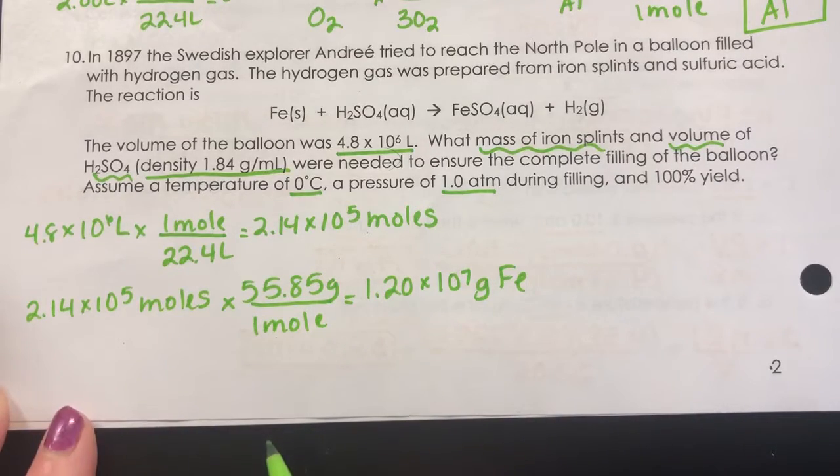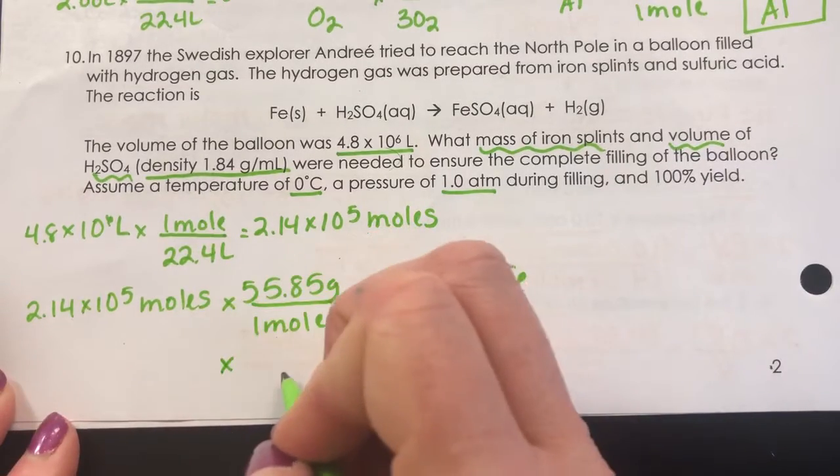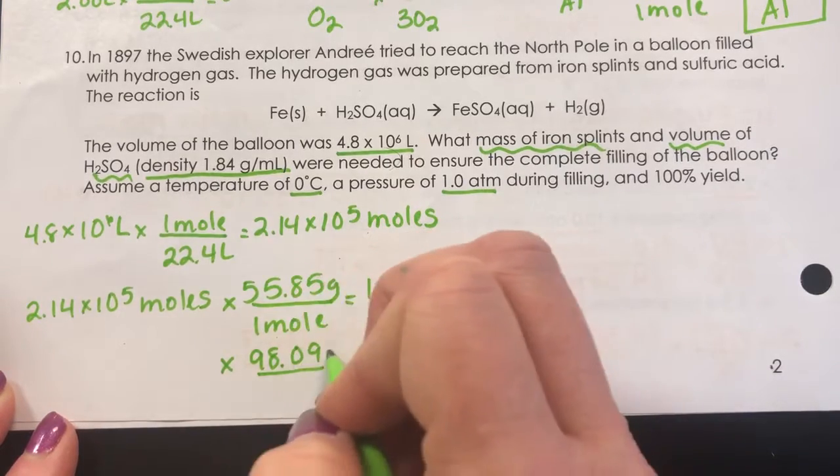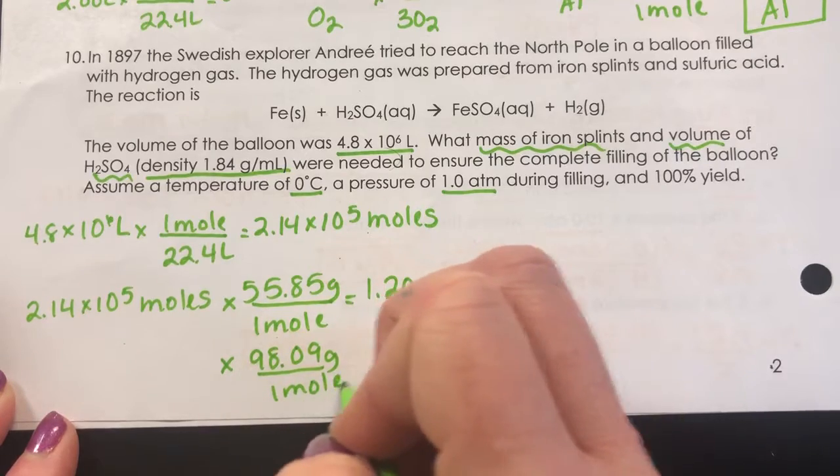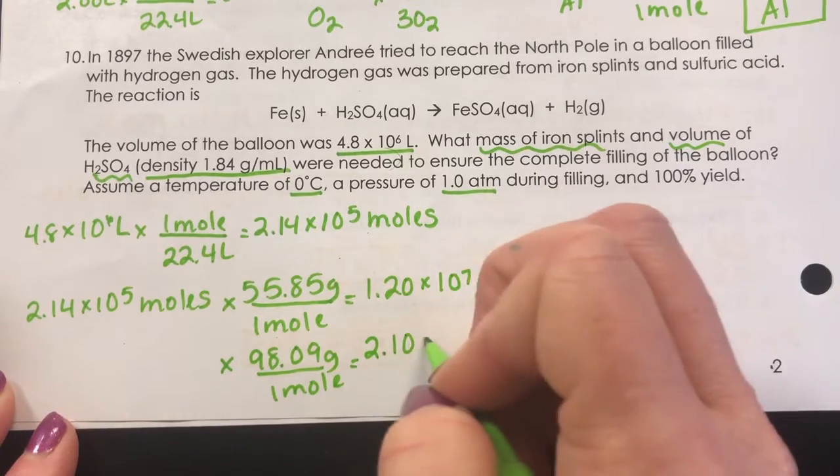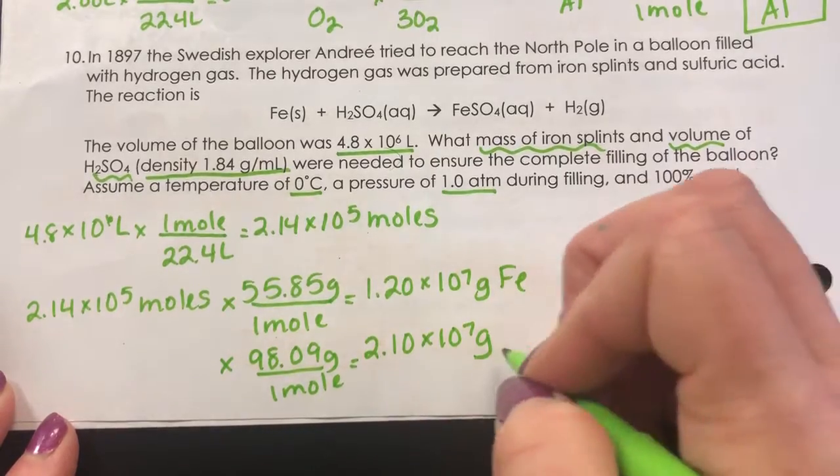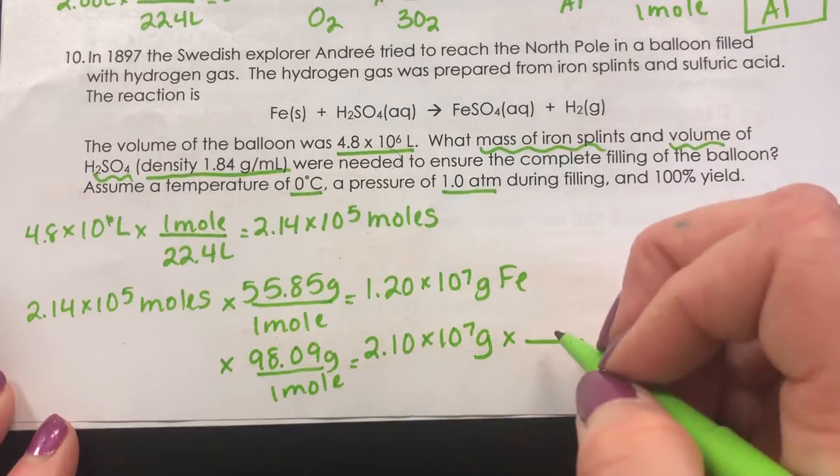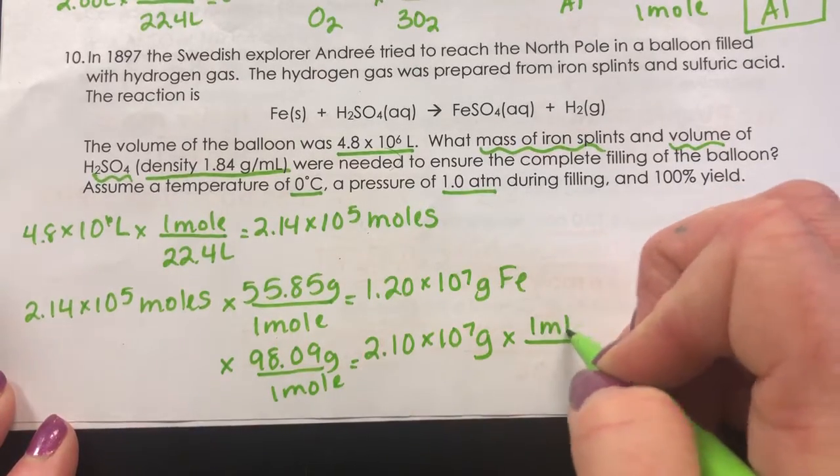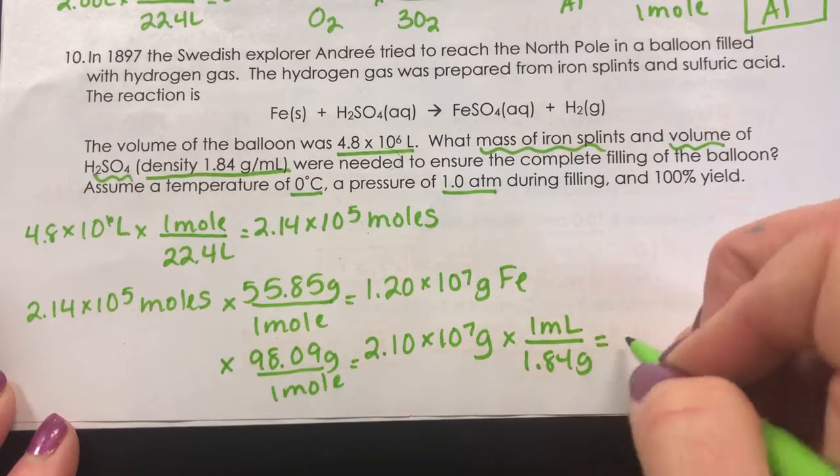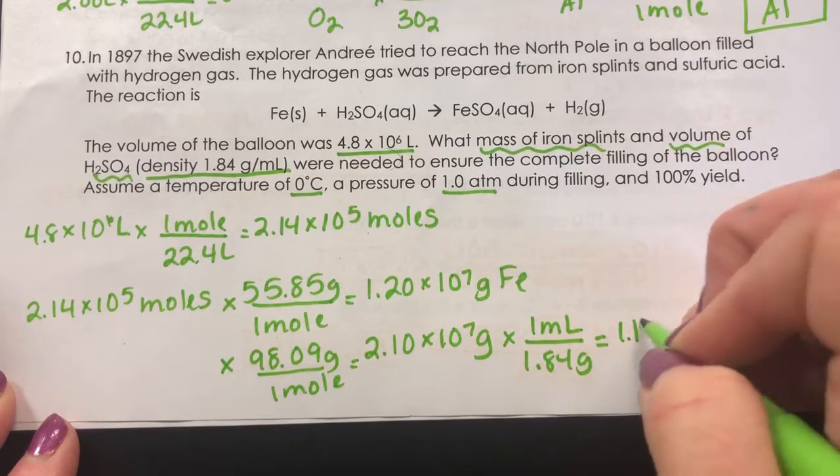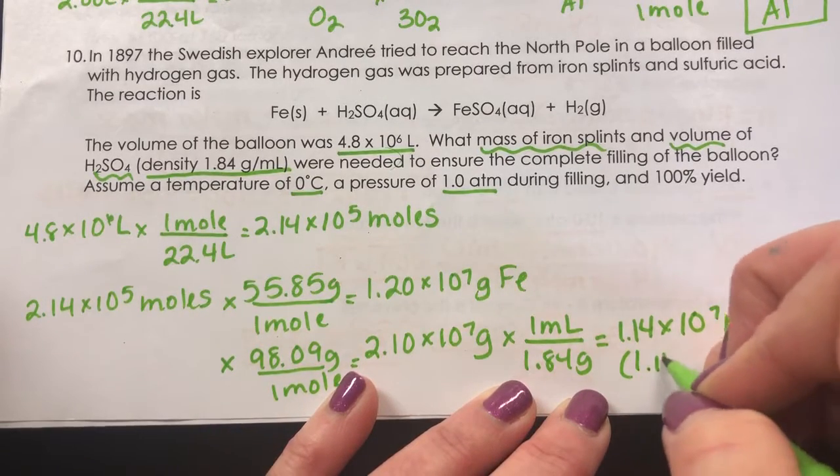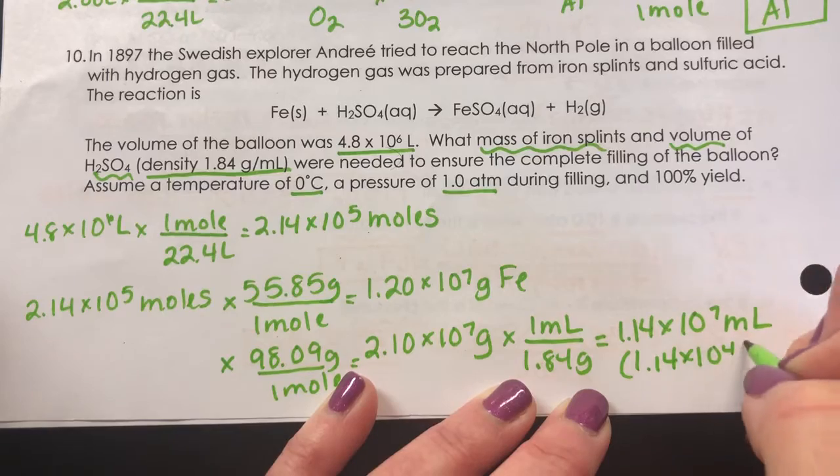The sulfuric acid is slightly different. We again need to first get the grams. So we'll multiply by the molar mass of sulfuric acid, which is 98.09, which means that we would need 2.1 times 10 to the 7th grams of sulfuric acid. But we need the volume. So we're going to multiply by the density of one milliliter has 1.84 grams. So we would need 1.14 times 10 to the 7th milliliters, or if you divide that by 1000, 1.14 times 10 to the 4th liters.